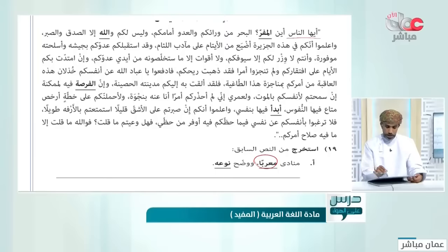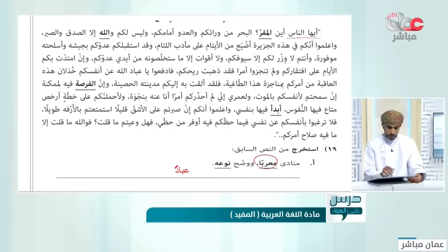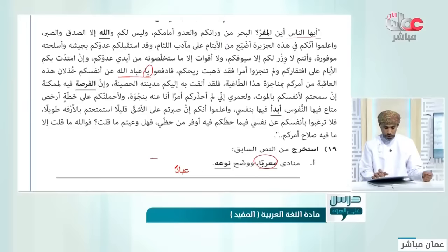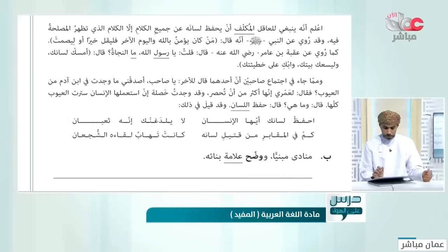استخرج من النص السابق منادى معرباً ووضح نوعه. المعرب: إما المضاف أو الشبيه بالمضاف أو النكرة غير المقصودة. 'يا أيها الناس' الناس ليس معرباً. 'يا عباد الله' - 'عباد الله' تركيب إضافي، إذن نوعه مضاف.